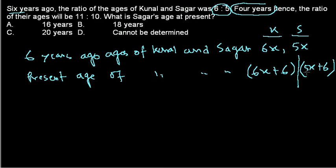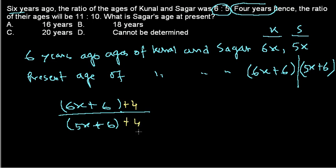So the present age of Kunal is 6X plus 6, and for Sagar is 5X plus 6. Now, the equation: four years later the ratio of their age will be 11 is to 10. So what will be the ratio four years later? So the present ratio of their age is this, right? Present ratio is this. And four years later both of them will be four more years older.